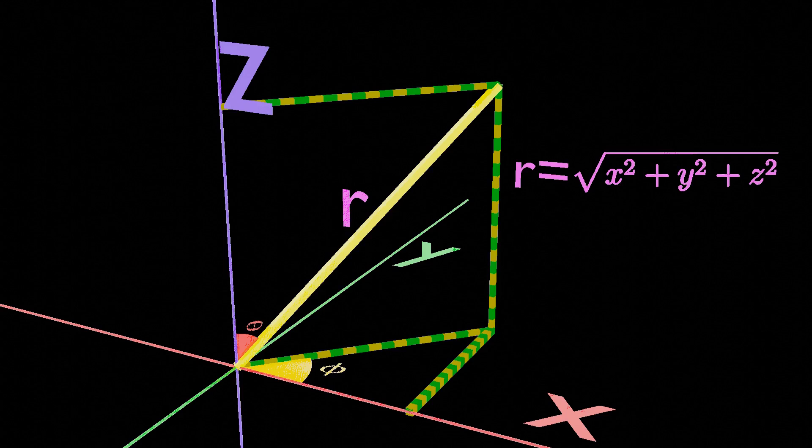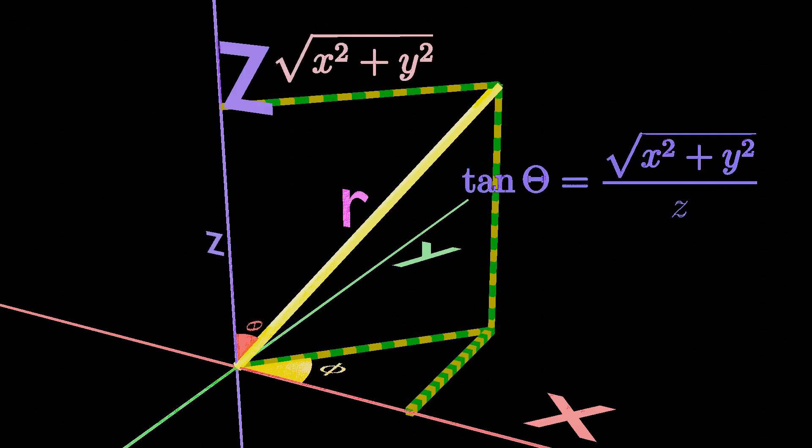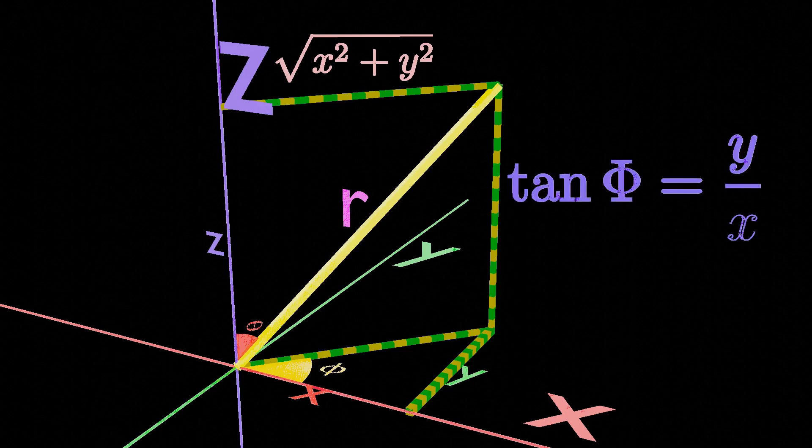The formula for theta can be obtained from the right angle triangle where tan theta equals the square root of x squared plus y squared over z. The formula for phi can be obtained from this right angle triangle where tan phi equals y over x.